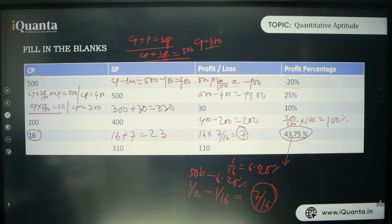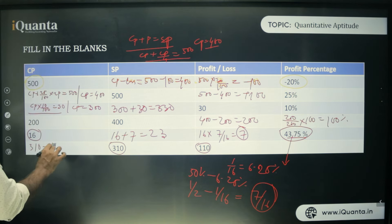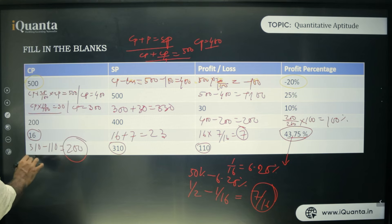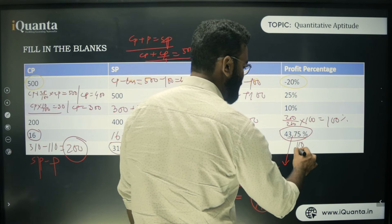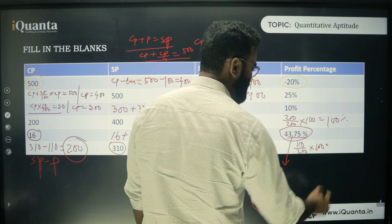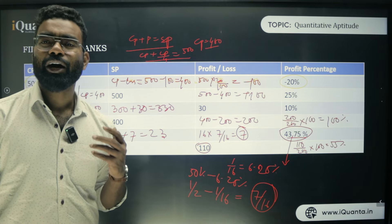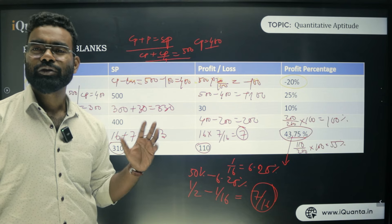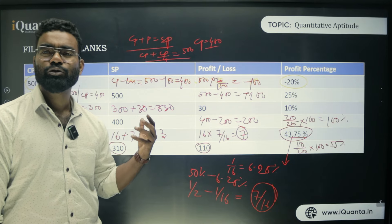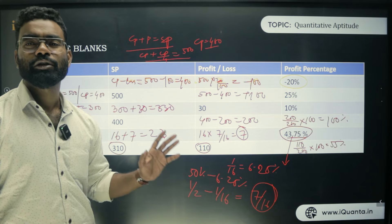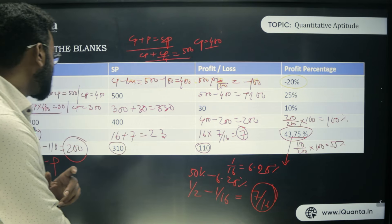Sixth case: SP = 310, Profit = 110. CP = SP − Profit = 310 − 110 = 200. Profit% = (110/200) × 100 = 55%. So the profit percentage is 55%. This chart helps you understand how to find profit%, loss%, selling price, cost price in any combination.